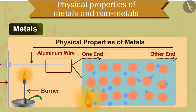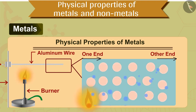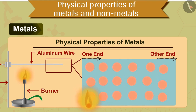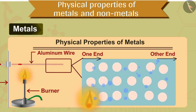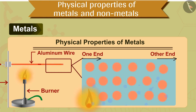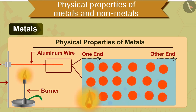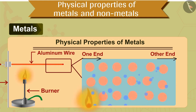When a metal is heated, its atoms receive energy and vibrate at greater speeds. This energy is received by the electrons present in the atoms. These electrons move in the metal. When energetic electrons move in the metal, they provide energy to the other electrons and atoms of the metal. In this way, heat is conducted from one end of the metal to the other.